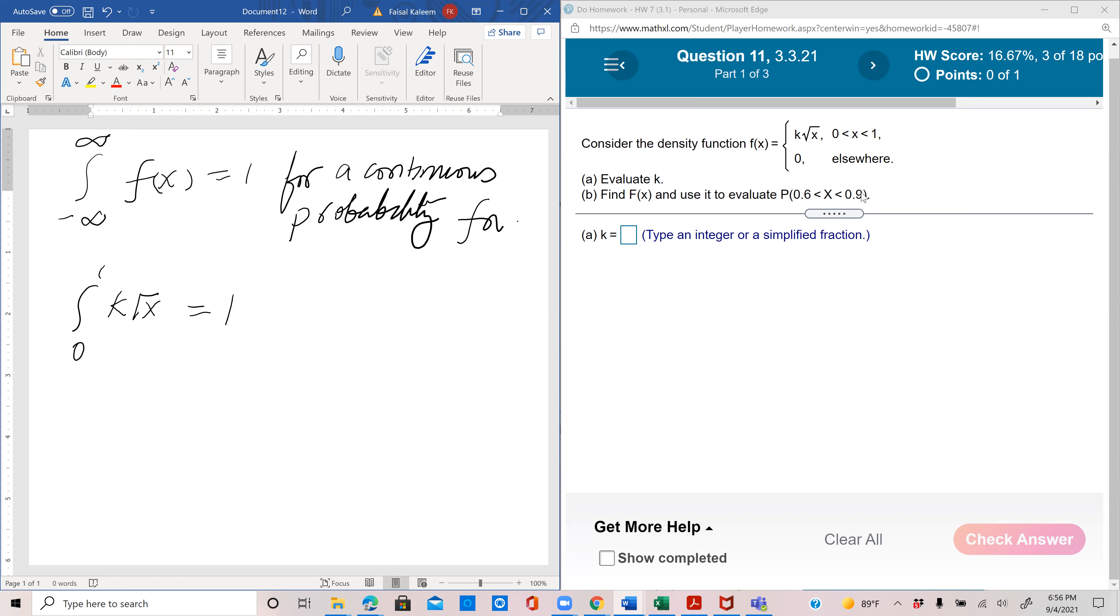This is equal to 1 and the square root x is x power half so it integrates into x power 3 by 2 divided by 3 by 2, 0 to 1 is equal to 1. And this can be written as 2k by 3, and then the 1 power 3 by 2 minus 0 power 3 by 2 and that's just 1 so that's 2k by 3 and that's equal to 1, so from here we get k is equal to 3 by 2 or 1.5.